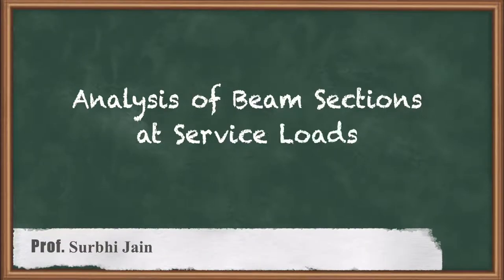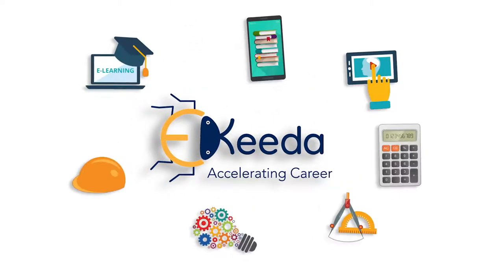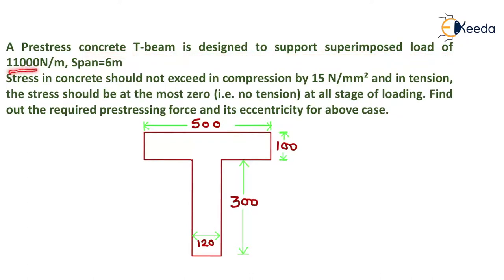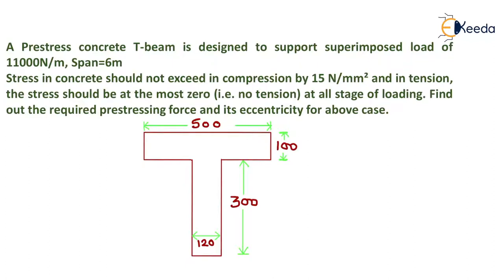Hello students, in this lecture we are going to solve a numerical problem on analysis of beam section at service load. A pre-stressed concrete T-beam is designed to support a superimposed load of 11,000 Newton per meter, span 6 meters. Stress in concrete should not exceed 15 N/mm² in compression and should be at most zero in tension, i.e. no tension, at all stages of loading. Find the required pre-stressing force and its eccentricity.